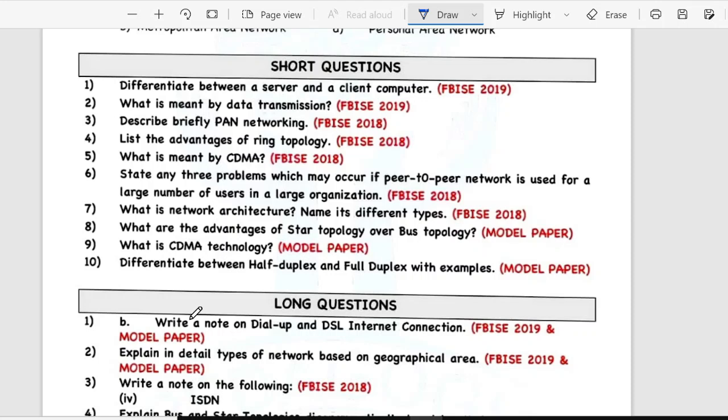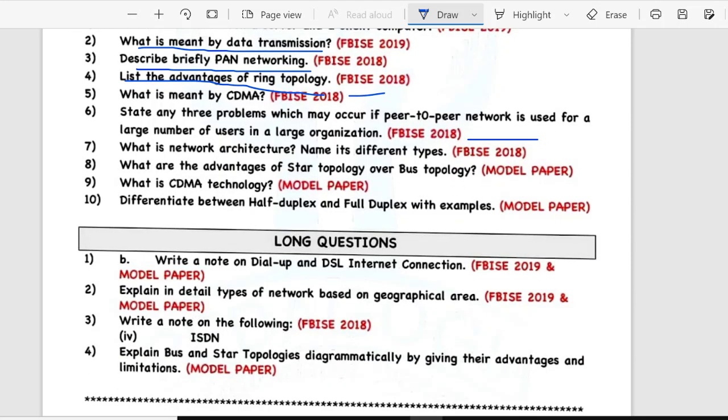After that short question will differentiate between a server and client computer. Second is what is meant by data transmission? Third is describe briefly PAN networking. Fourth is list advantages of ring topology. Fifth is what is meant by CDMA? Sixth is state any three problems which may occur if peer-to-peer network is used for a large number of users in a large organization. Seventh is network architecture, name its different types.